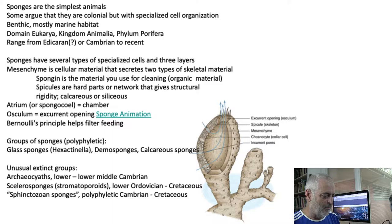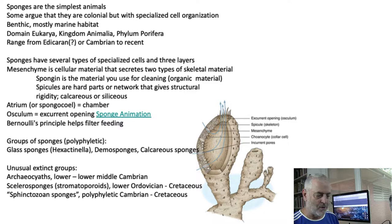Sponges are a polyphyletic group — there are many different kinds of materials that make them up, and most people agree they're very primitive. It's very hard to tell where to draw the line between them. Some of them are made out of silica, some are made out of calcite, and some only have that spongin-type material. But they may have plus or minus the spicules.